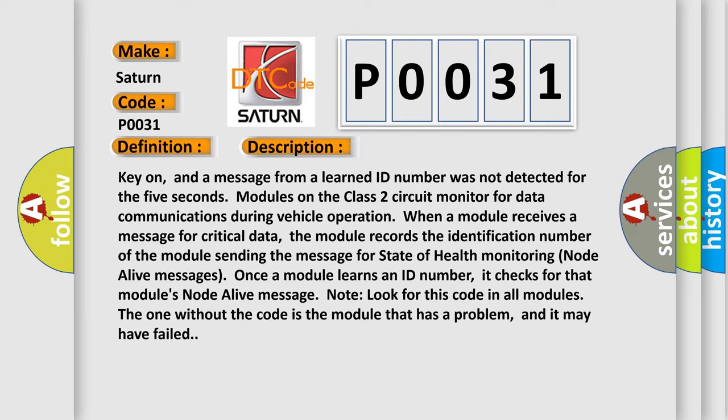Once a module learns an ID number, it checks for that module's node alive message. Note, look for this code in all modules. The one without the code is the module that has a problem, and it may have failed.